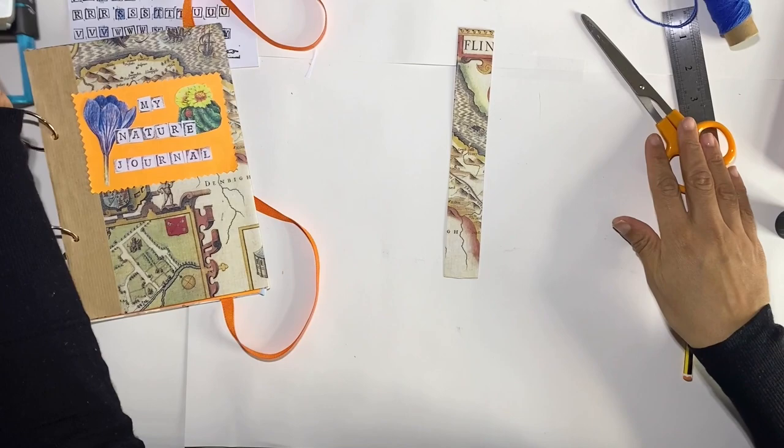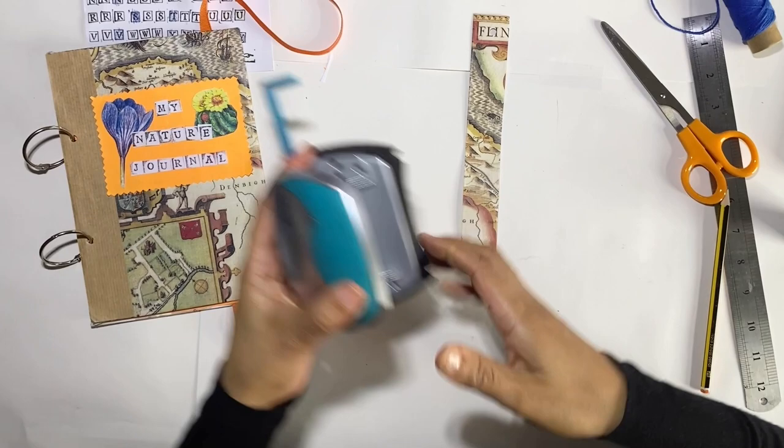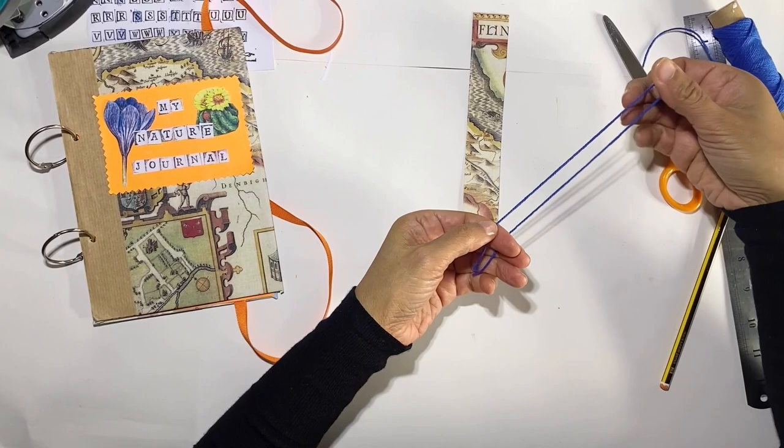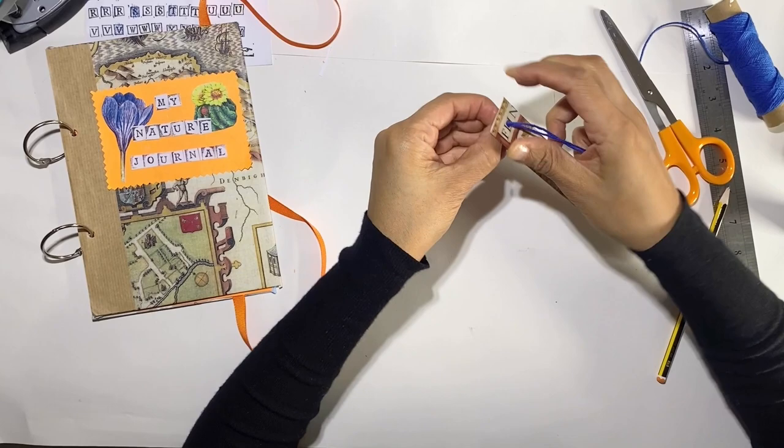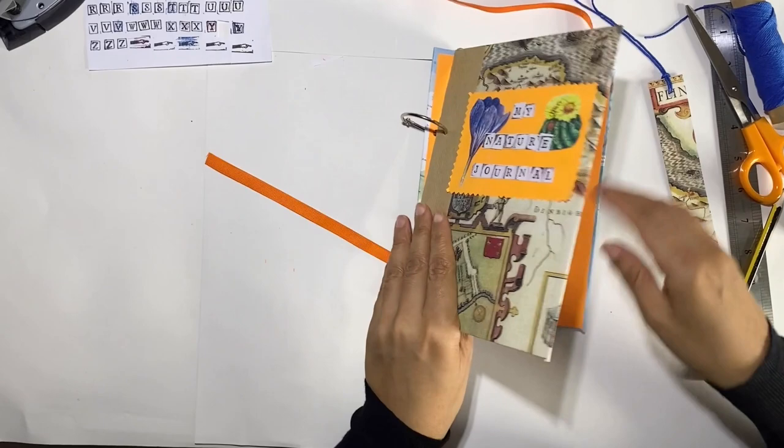Glue the paper and then neatly fold it in half. Using the hole punch, carefully make one hole at the top in the middle. Cut some string and then attach it onto the bookmark. Tie it in place and then attach it into the journal.